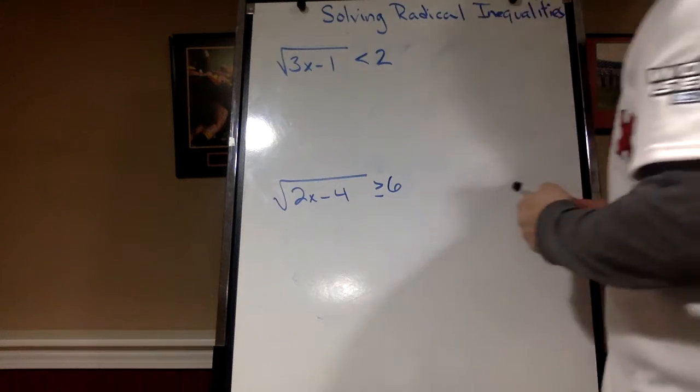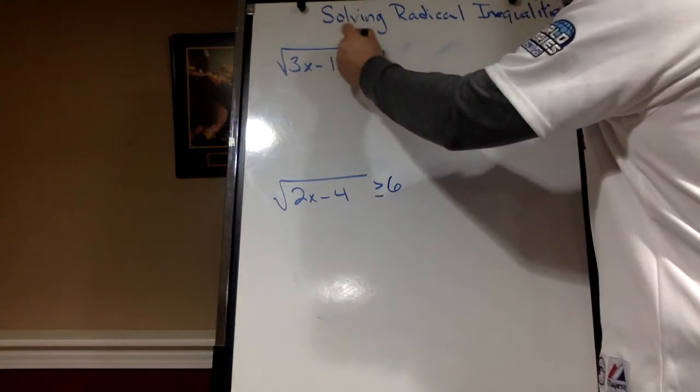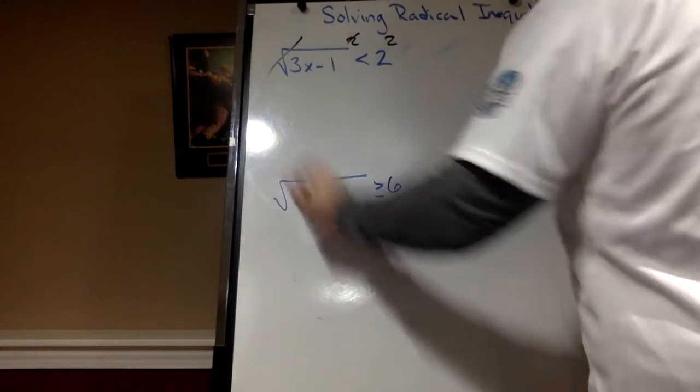Alright, so let's solve this like we normally do. We do opposites to get the variable alone. So let's square both sides. Those are arch enemies.